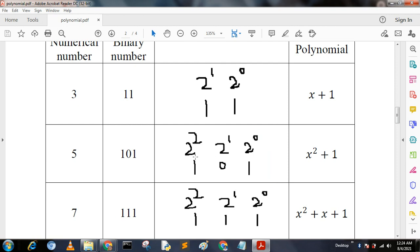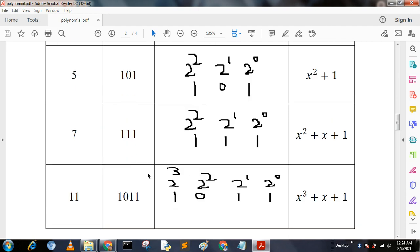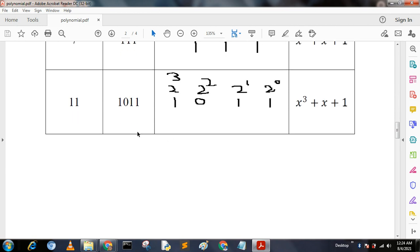That is x^2 + x^1 + x^0, which equals x squared plus x plus 1. Next prime number 11.